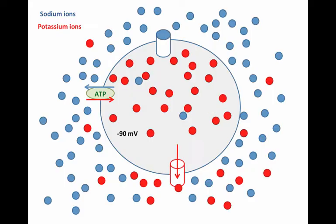And it would leave the cell until the cell became minus 90 millivolts. And this is because minus 90 millivolts is the equilibrium potential for potassium. That's the membrane voltage that holds onto any potassium ions that would have a tendency to leave the cell, because negative attracts positive.